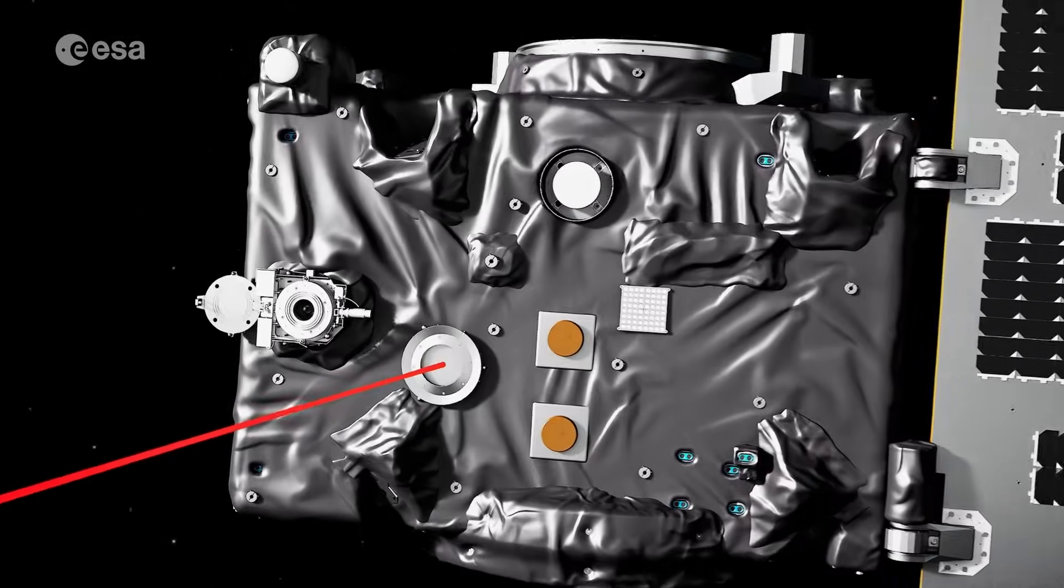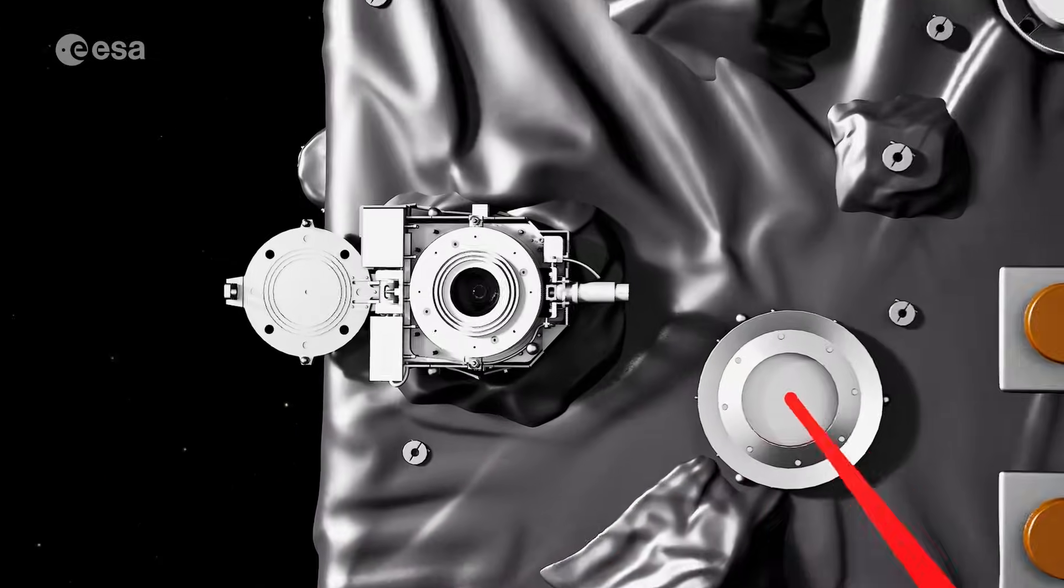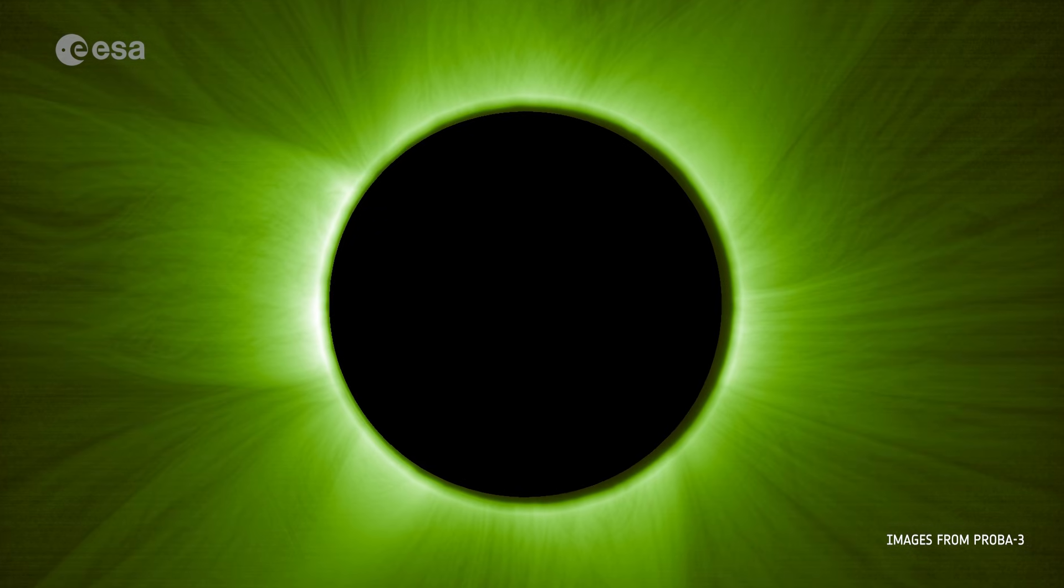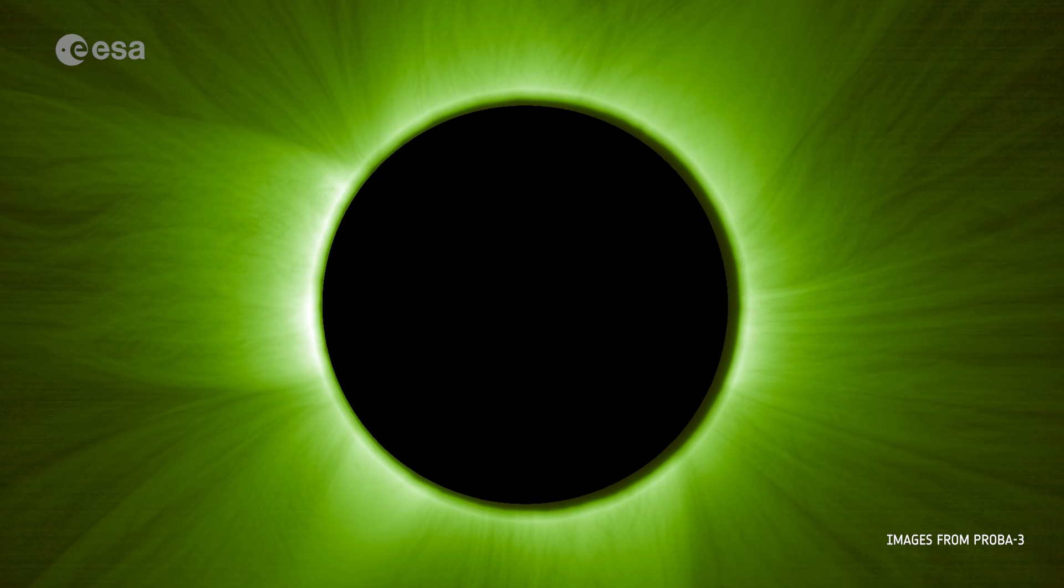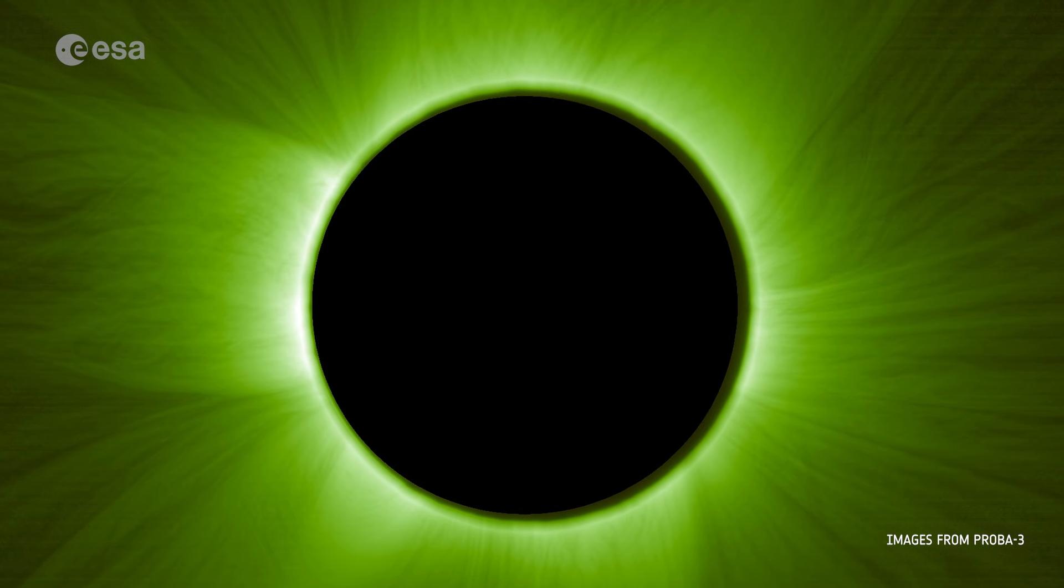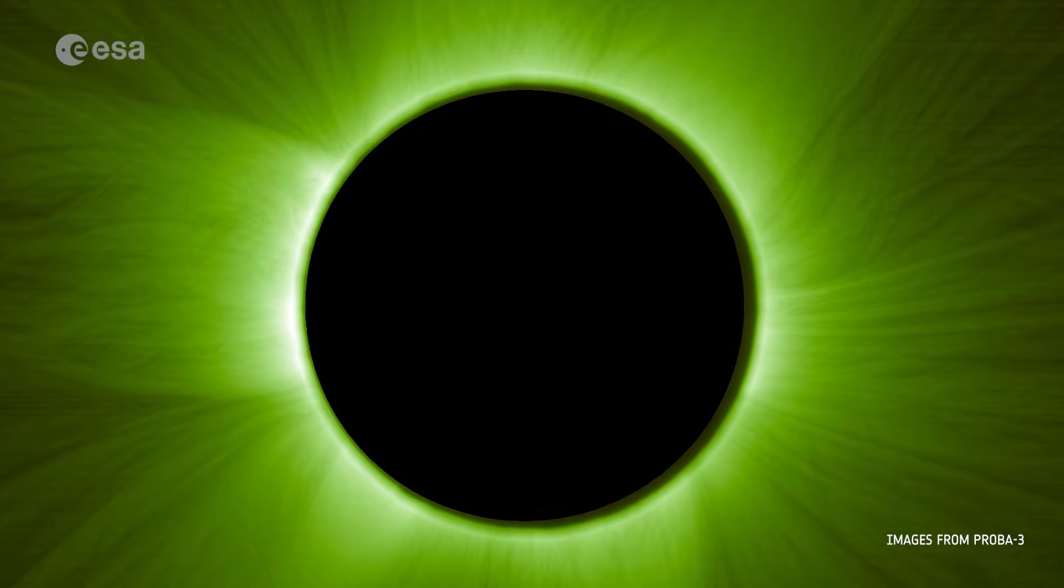This allowed the onboard instrument to capture its first images of the Sun's inner corona, normally hidden by the Sun's intense glare. This outer atmosphere burns at over a million degrees, far hotter than the Sun's surface.